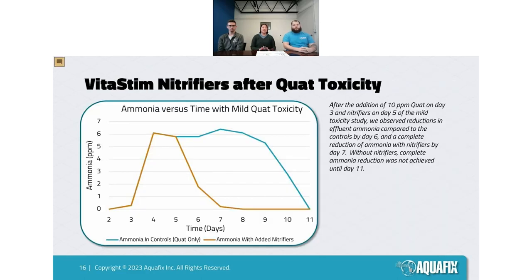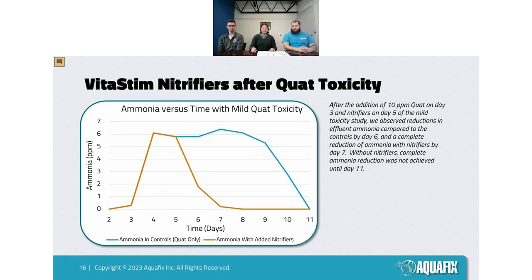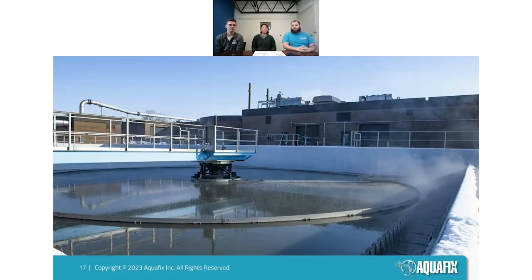Here's another experiment we did in the lab using lab-grown mixed liquor at 2000 ppm. We let it grow for a day to acclimatize, then hit it with a 10 ppm quat dose on day three. Two days later we added VitaStim Dynamic Dual. The orange line (with Dynamic Dual) showed ammonia reduction re-establishing within about two days, versus the blue line (no product added), which took five to six days before any ammonia removal began again. This is covered in the paper in your handouts tab.